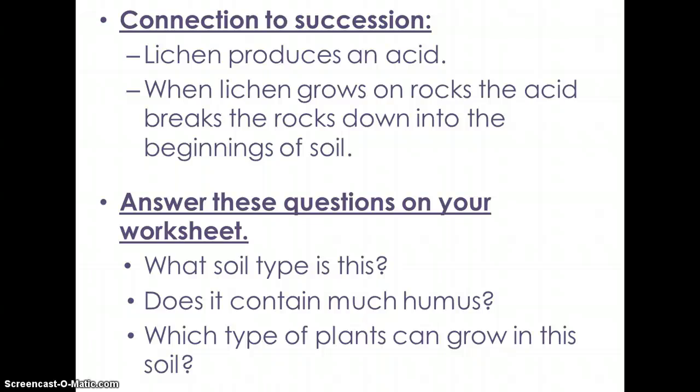Now that you've learned about the different kinds of symbiotic relationships and how they connect to succession, stop and answer the questions on your worksheet: once the lichen has done its job, what kind of soil are you left with? How much humus do you think is in this soil? And which types of plants can grow in this soil? I hope you've learned about the different types of symbiotic relationships. If you have any issues with these questions, you can always rewind, pause, and review the video. Have a good night.